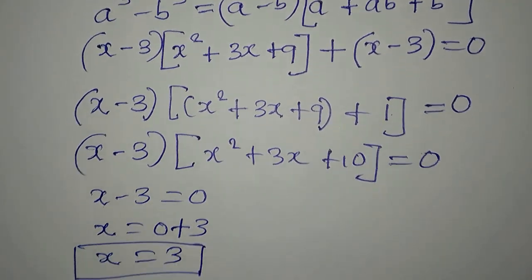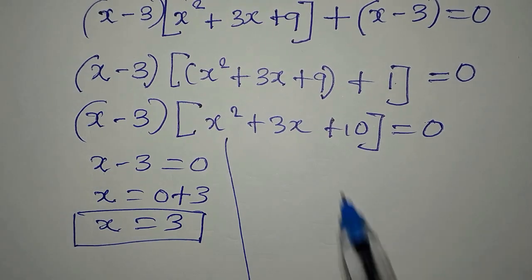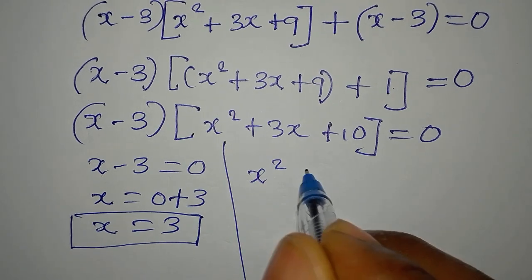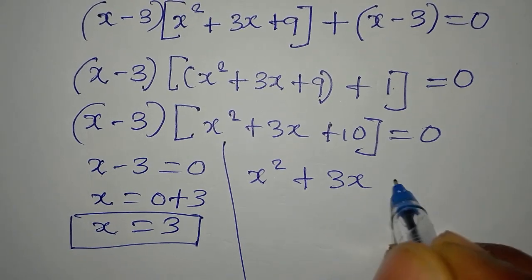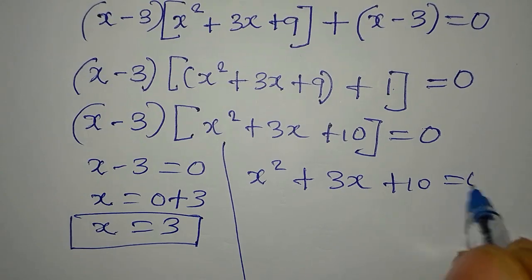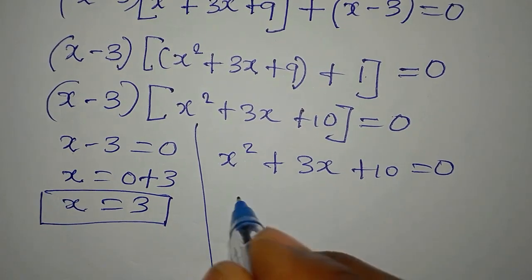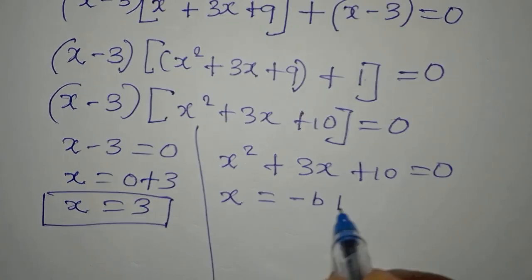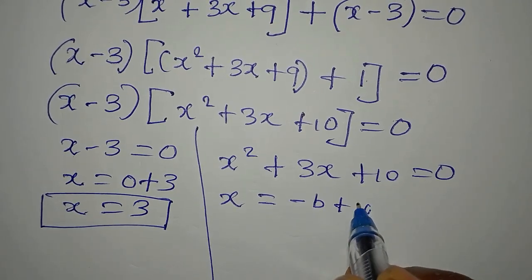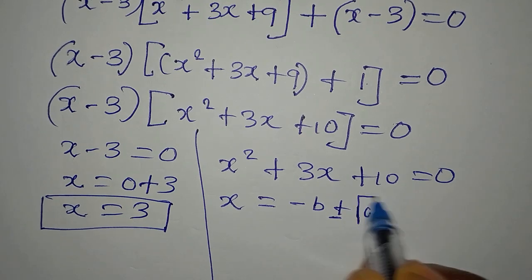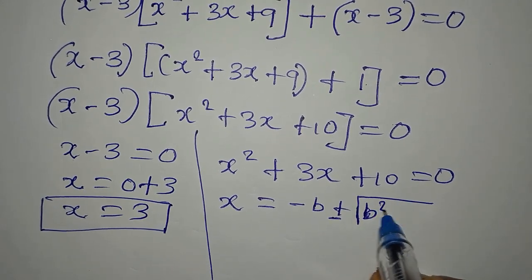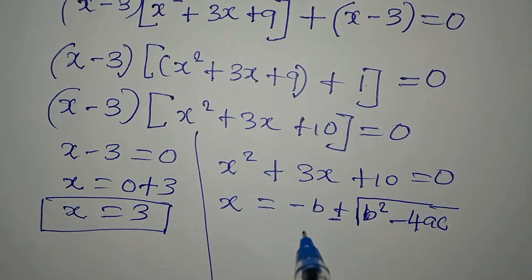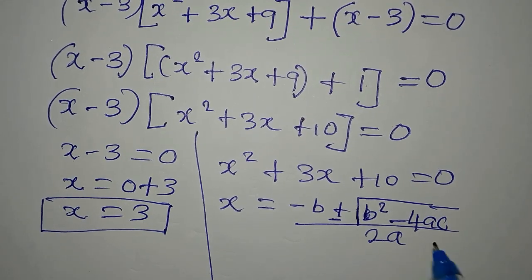Because we have to solve completely, we go back to x squared plus 3x plus 10 equals zero. We'll use the quadratic formula: x equals minus b, plus or minus the square root of b squared minus 4ac, all over 2 times a.